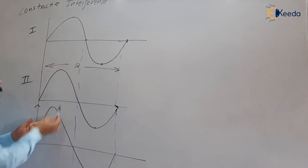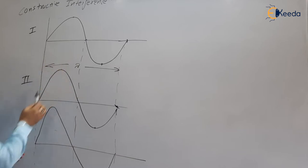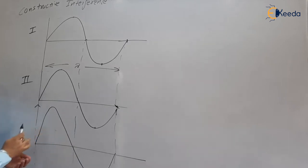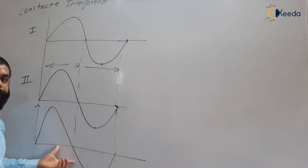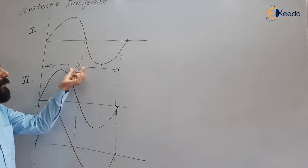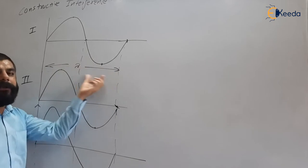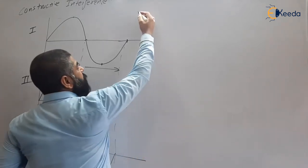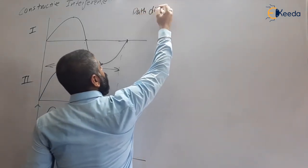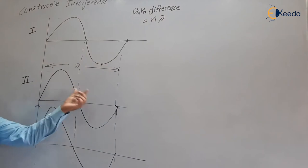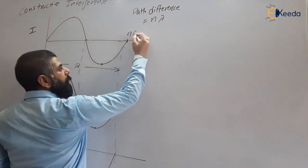These two waveforms are superimposed to form a resultant waveform of very high intensity or very high amplitude. This is due to constructive interference. To get this very high amplitude waveform, the path difference between the two waves must be lambda. Shifting by lambda or 2 lambda gives the same condition. So for constructive interference, the path difference should be n times lambda.